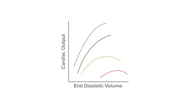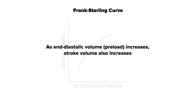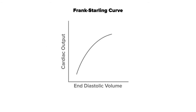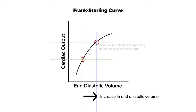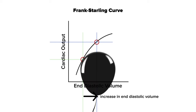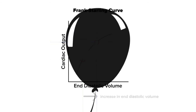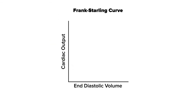The heart can also increase stroke volume without the use of medications. You might be familiar with the Frank-Starling law, which states that as end diastolic volume increases, so does stroke volume. This is because the more you fill the heart with blood, the more the ventricular walls stretch, and like an elastic or balloon that is stretched further and further, the heart will contract back to its original shape with more force. Another factor that increases stroke volume is a decrease in afterload.